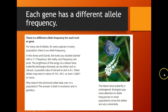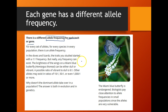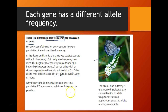This is review from biology A: every single allele has a different frequency in the population. In the doves and lizards we studied, traits started with a one-to-one frequency — equally common — but any frequency can exist. For example, with this Miami blue butterfly, we could have two alleles — dull wings or vibrant wings — with a ratio like 6 to 1, or even ratios of 50 to 1 or 1000 to 1.